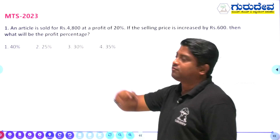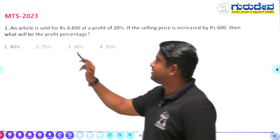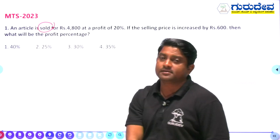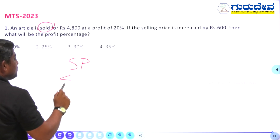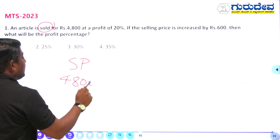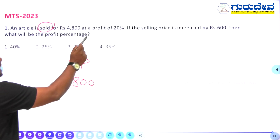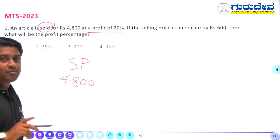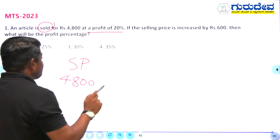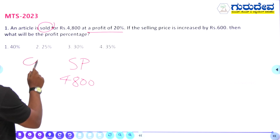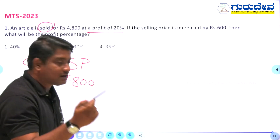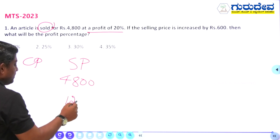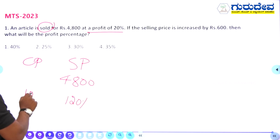Okay, let us do the first question. An article is sold for ₹4800 — that is the selling price. At a profit of 20 percent. Now if I consider the cost price as 100 percent, then 20 percent more means the selling price is 120 percent.